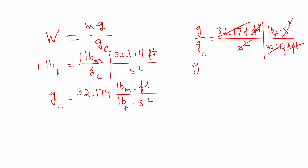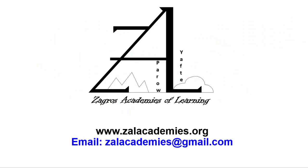we are going to be left with G over GC, its value is 1 and units would be pound force per pound mass.